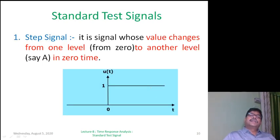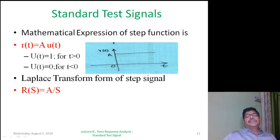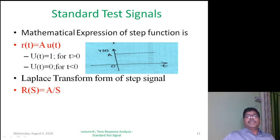The first standard test signal is the step signal. It is a signal whose value changes from one level — usually from zero to another level, say A — in zero time. The unit step signal is shown in a diagram with time on the x-axis and output U(T) on the y-axis. Mathematically, if R(T) = A·U(T), then U(T) equals 1 for T greater than 0 and 0 for T less than 0. The Laplace transform of the step signal is A/S.